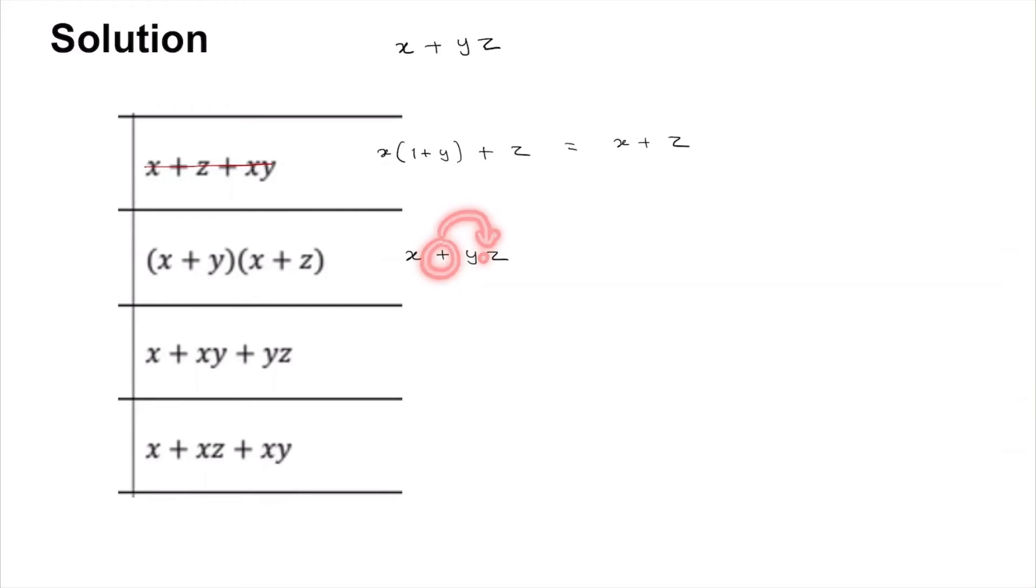The third option is similar to the first one where you can take X common. This is X and 1 or Y or YZ, so this is X or YZ. So the third one is correct.